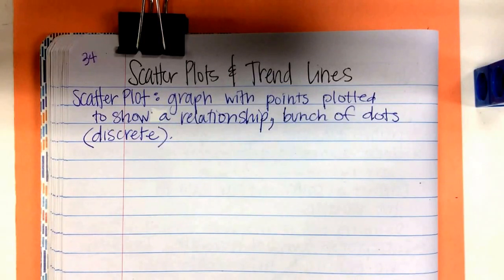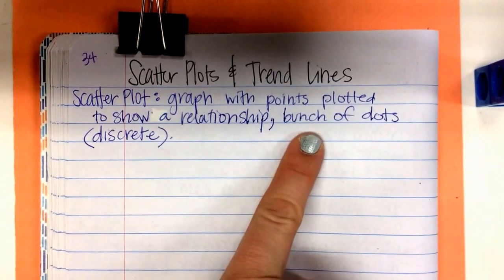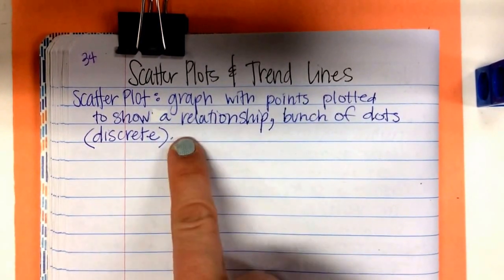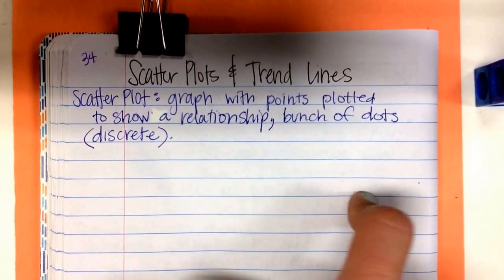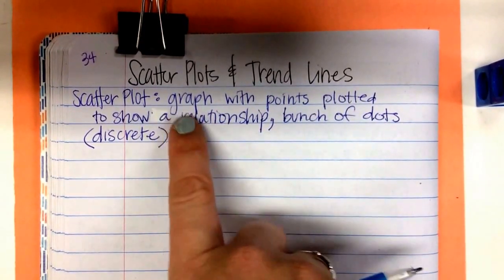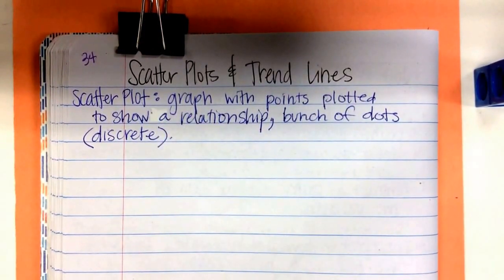So in a scatter plot, there are two variables, right? There's the X variable and the Y variable. And it's usually shown with a big amount of data. Usually a scatter plot isn't just five pieces of data. Now, we're going to do it with five pieces of data because I don't want to hear you complain about having to graph 100 pieces of data. But usually a scatter plot is just a whole bunch of dots everywhere.